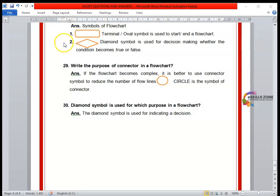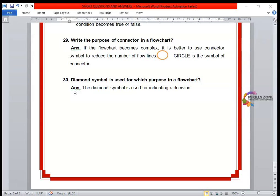Next question, number 29. Write the purpose of connector in a flowchart. If the flowchart becomes complex, it is better to use connector symbol to reduce the number of flow lines. Circle, this symbol - circle is the symbol of connector. Next question: diamond symbol is used for which purpose in a flowchart. The diamond symbol is used for indicating a decision in a flowchart.